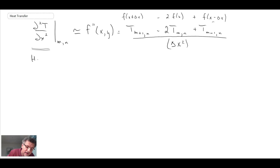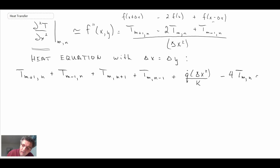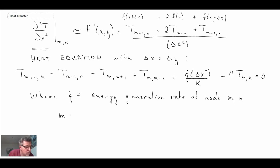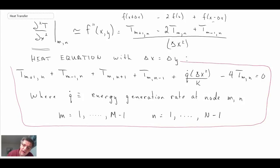Substituting both second derivatives back into the heat equation and using uniform grid spacing where delta x equals delta y, after some rearranging we end up with the final finite difference equation. In this equation, q-dot is the generation rate. This equation applies for subscripts m going from 1 to M minus 1 and n from 1 to N minus 1 — these are the interior nodes. The boundaries are treated separately with boundary conditions. This is the heat diffusion equation transformed into finite difference form.